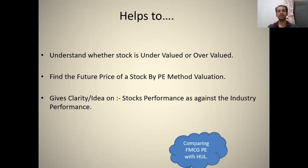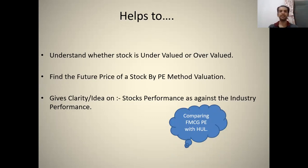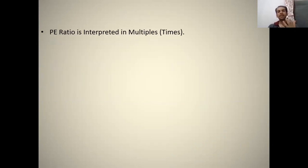We will understand stock performance versus industry performance by taking the example of HUL, which is Hindustan Unilever, a well-known FMCG sector stock. We will compare the price-earnings ratio of HUL with the price-earnings ratio of the FMCG sector as a whole. The PE ratio is always interpreted in multiples or times.